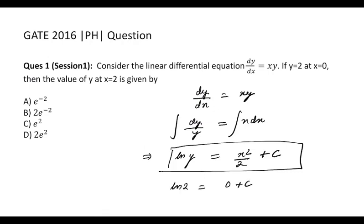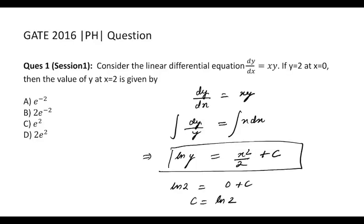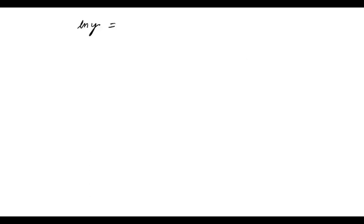Which gives c = ln 2. Therefore the solution is ln y = x²/2 + ln 2, which we can write as ln y - ln 2 = x²/2.